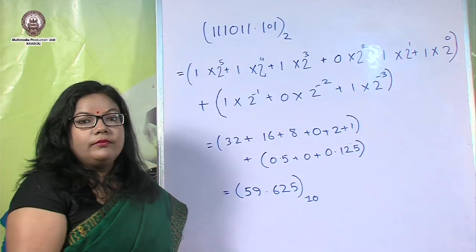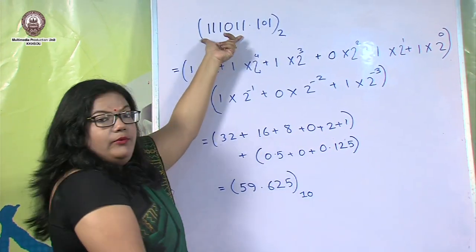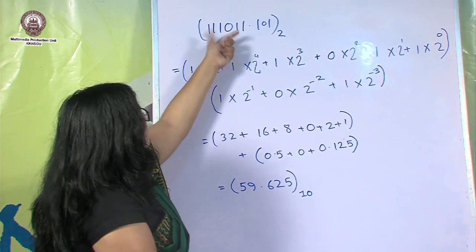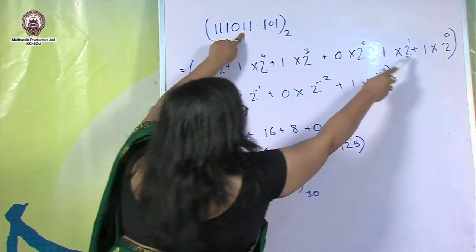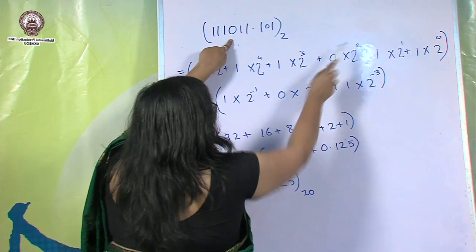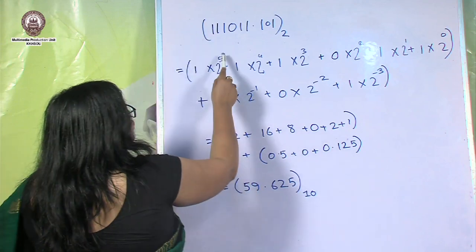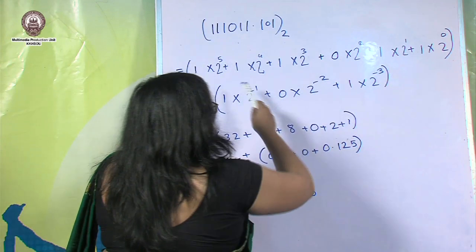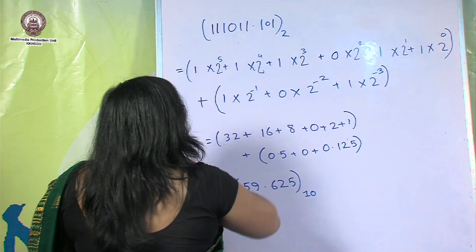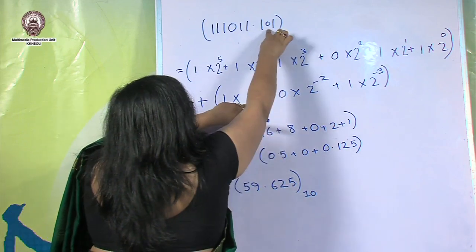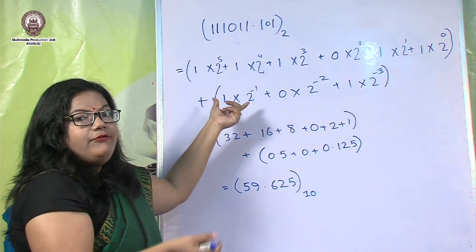For a binary number with a fractional part, the integer part is handled the same way. For the fractional digits, we multiply the first digit by 2 to the power minus 1, the next by 2 to the power minus 2, and the next by 2 to the power minus 3. The weights for the fractional part are negative powers of 2.